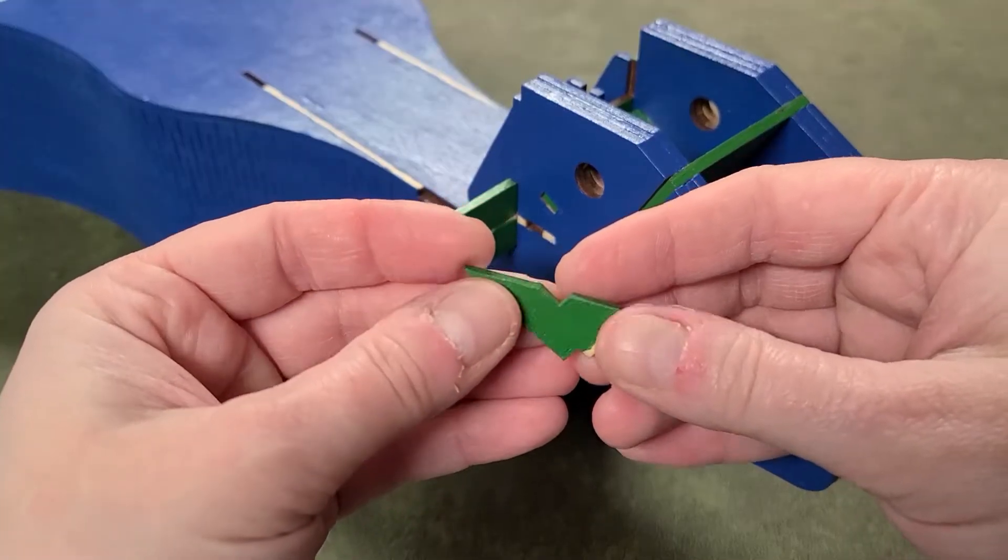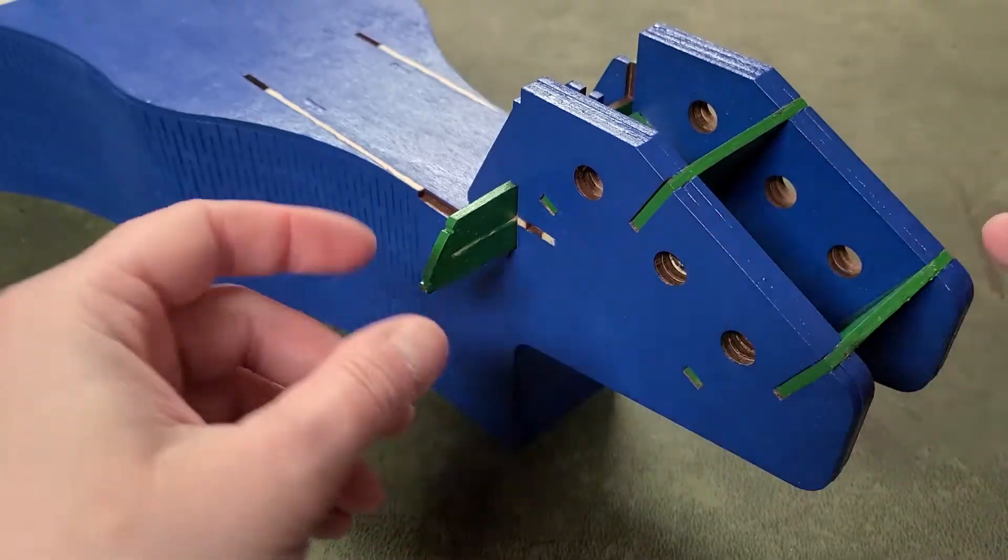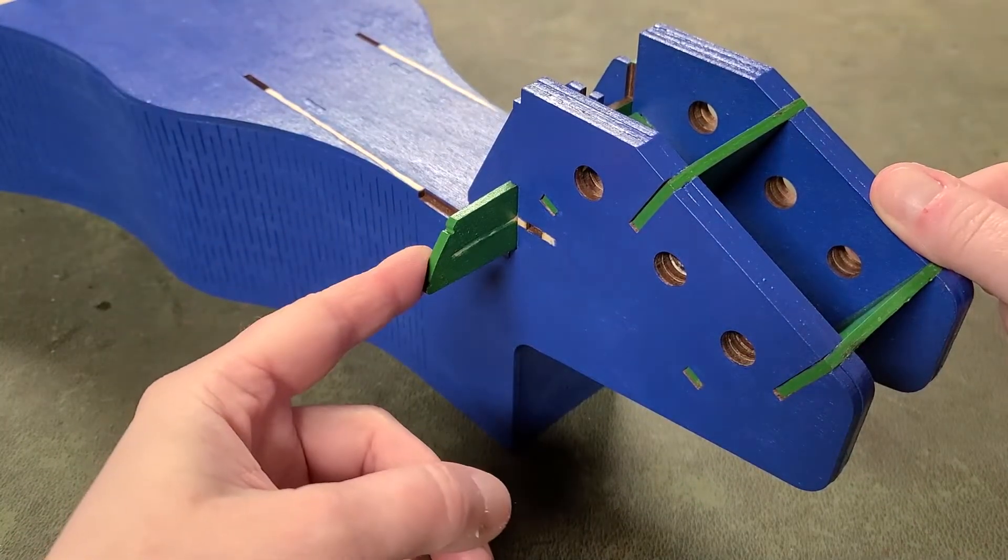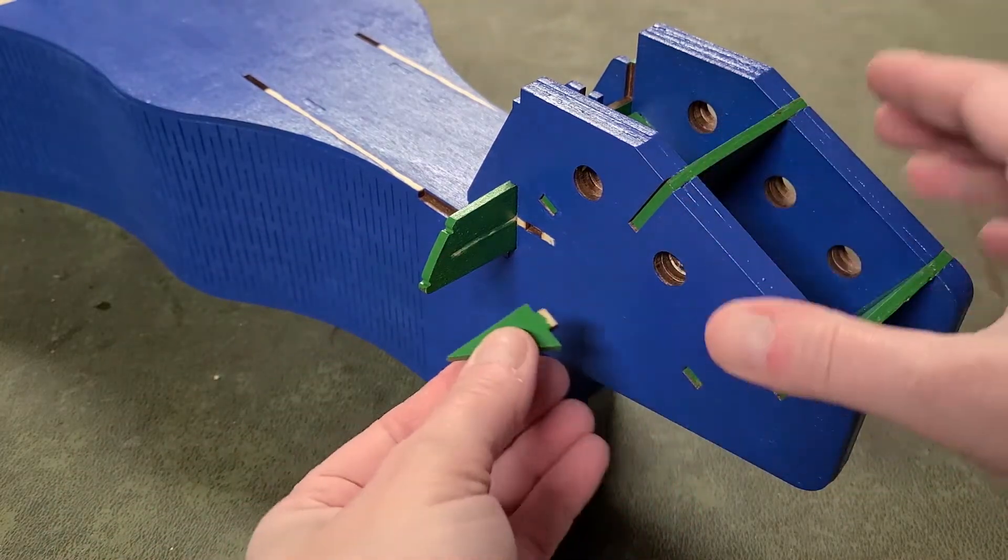Before I start gluing on the most obvious parts, I'm going to get these little triangle pieces on first. They're going to go just behind these wing-looking parts on either side of the tuning head to give those wings a little bit more stability.